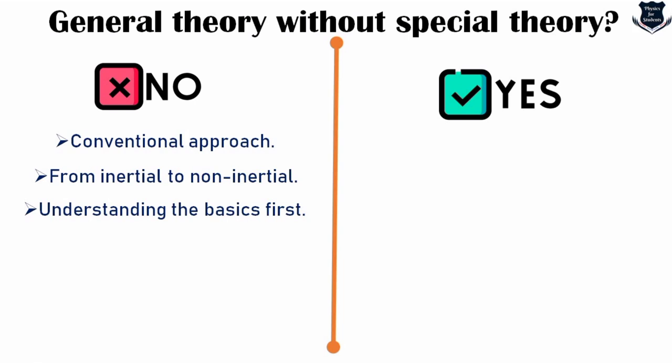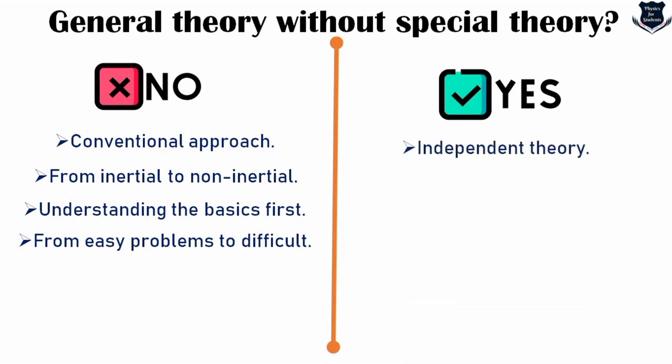Going from easy to difficult: because special relativity needs speed, velocity, mass, energy, and momentum, it becomes easier as you start with easy concepts and slowly progress to difficult ones. So in some way you need an understanding of special relativity because it is the conventional approach — you start with the basics and move up.